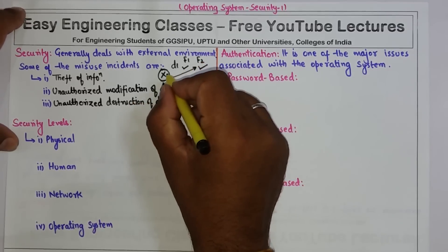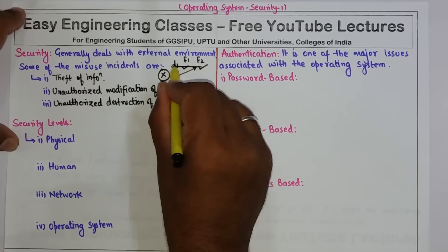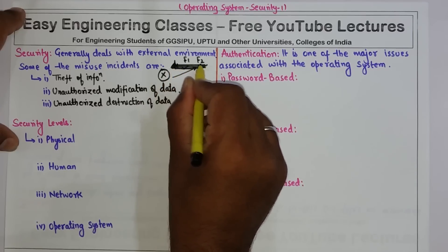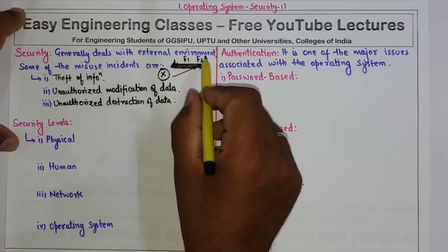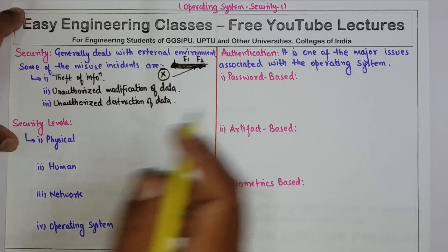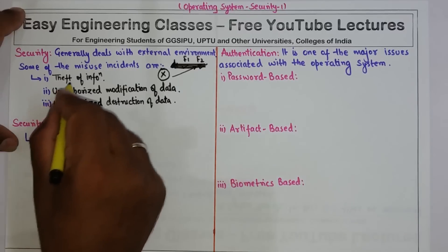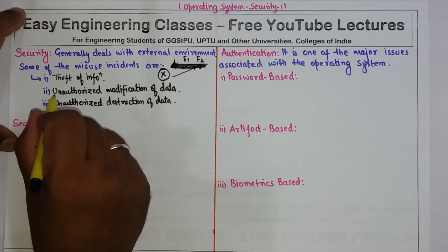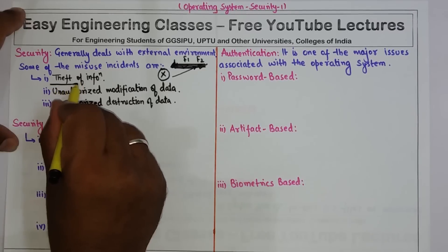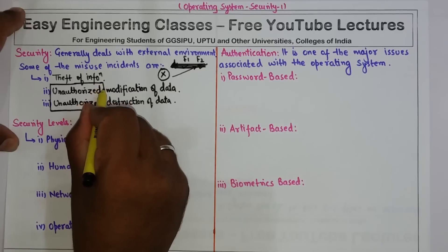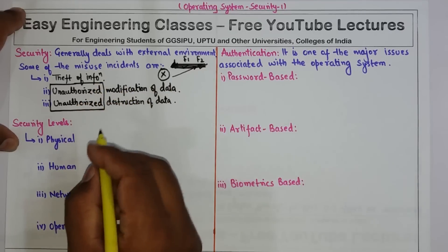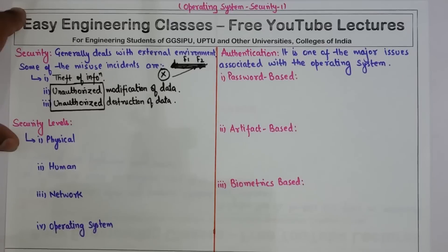Third can be unauthorized destruction of data. Similarly, if this attacker deletes the entire entry, the consequence is that a process executing in domain D1 can no longer access any of the resources F1 and F2. In these three incidents, the word 'unauthorized' is very important — a legitimate external user can still perform modification and destruction of data, but if the user is unauthorized, that comes under a security breach.